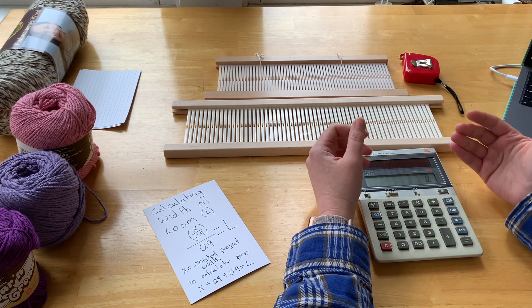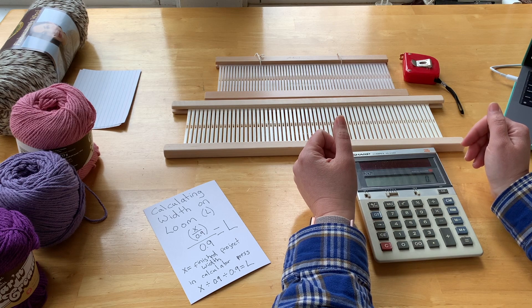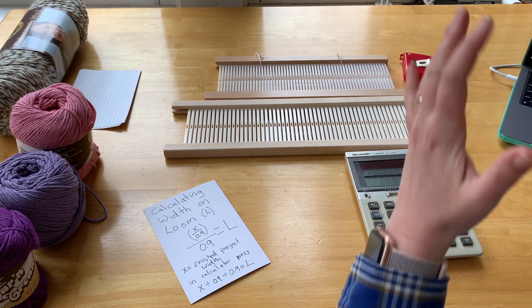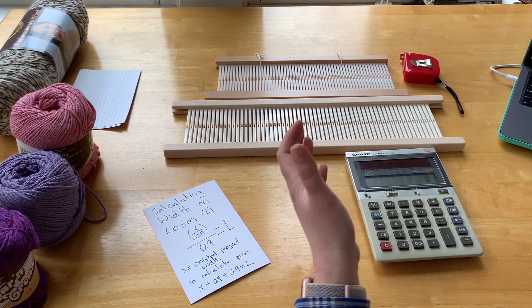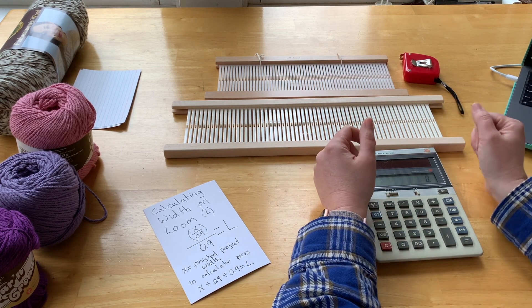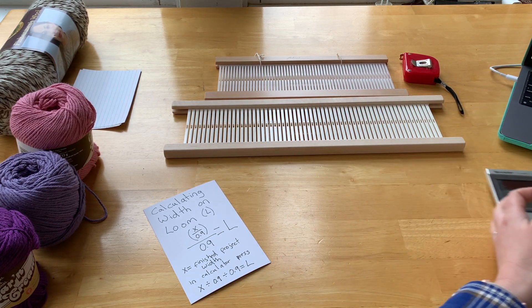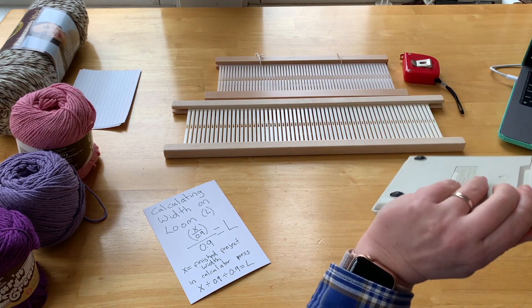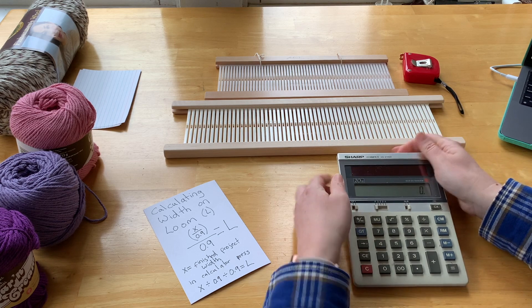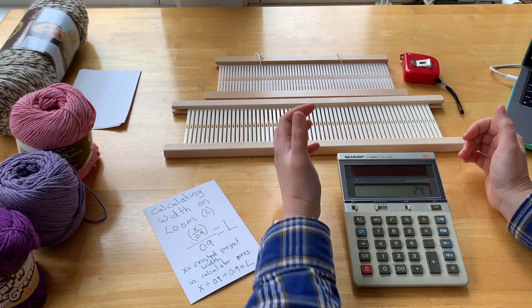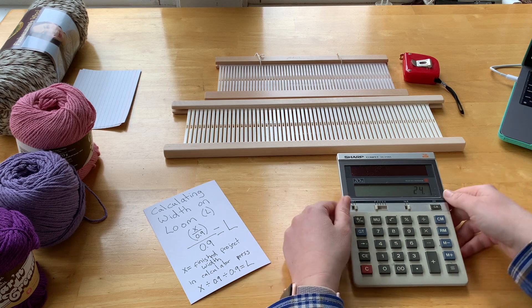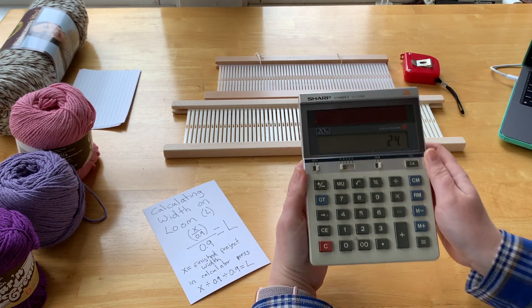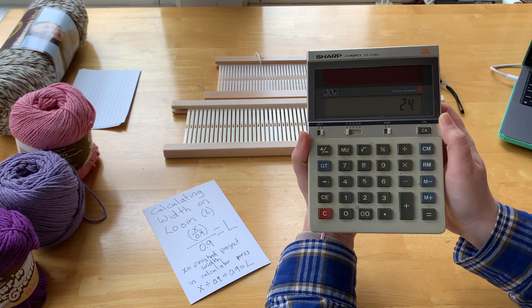To be as accurate as possible, you need to start with that final measurement—what do you want the finished project to be—and you have to work backwards from there. So here goes: I want my final project to be 24 inches. Let me get this calculator put up here for you so you can see that on the camera.